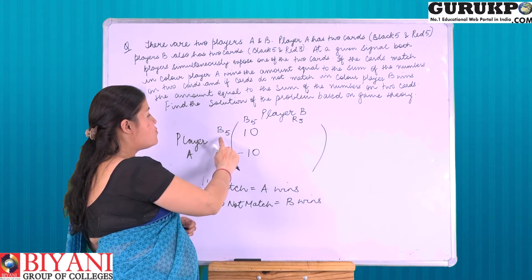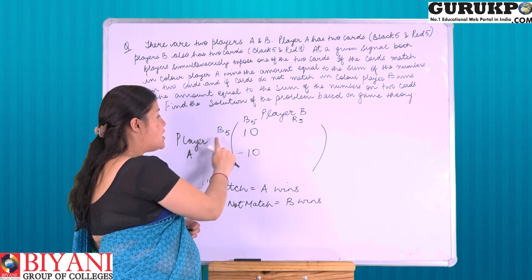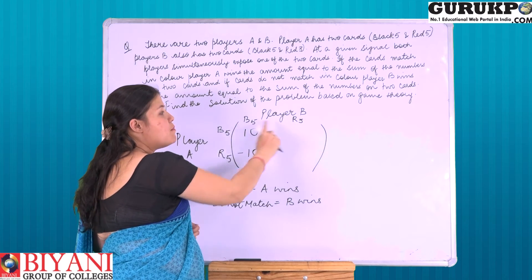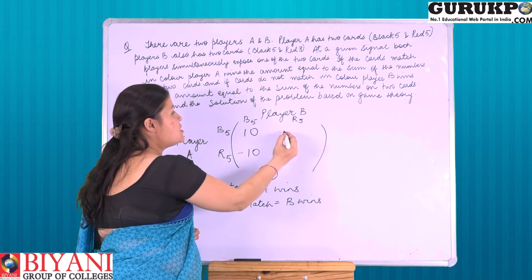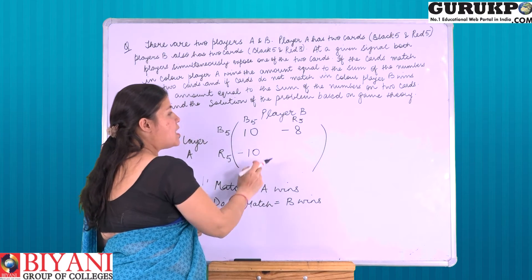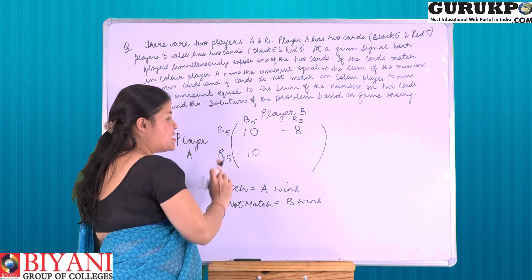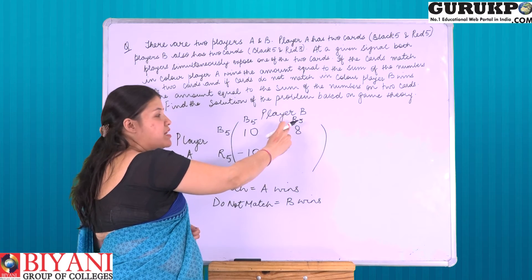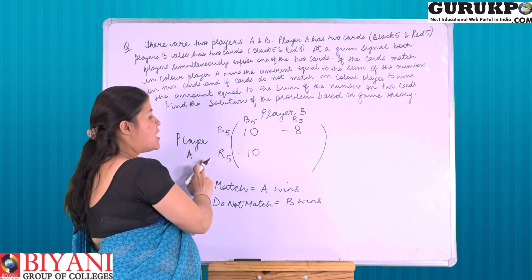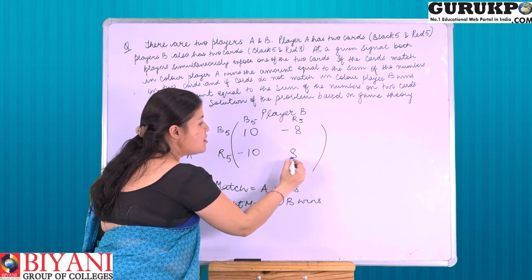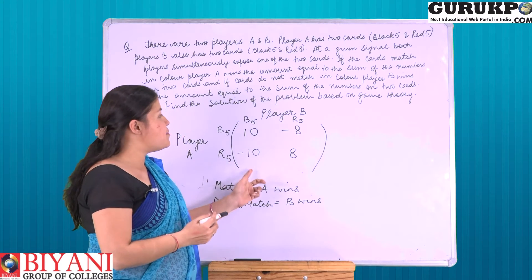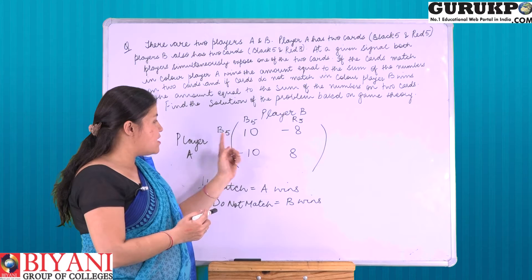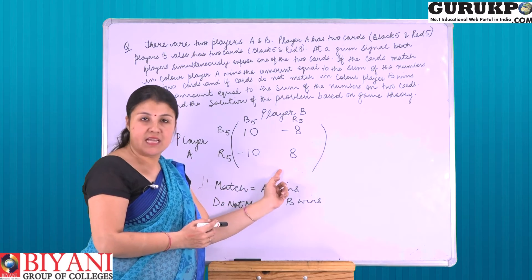When player A shows black 5 and player B shows red 3, the cards do not match in colour, and player B wins the amount equal to the sum on the cards, that is 5 plus 3 equals 8. When player A shows red 5 and player B also shows red 3, A wins the amount equal to the sum on the cards, shown as positive 8. So the payoff matrix is: 10, -10, -8, 8.